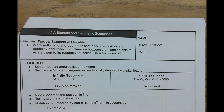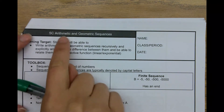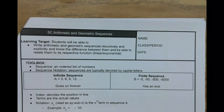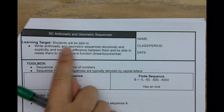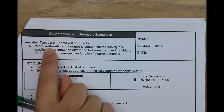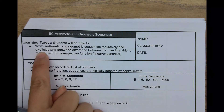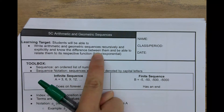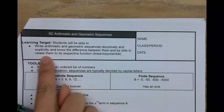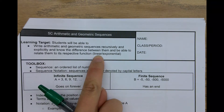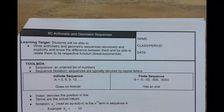Hi guys, so today we are starting on our next learning target, which is arithmetic and geometric sequences. By the end of this learning target, you should be able to write arithmetic and geometric sequences recursively as well as explicitly, and know the difference between them. You should also be able to relate them to their respective function, where arithmetic sequences are linear and geometric sequences are exponential.